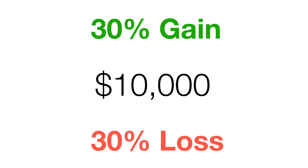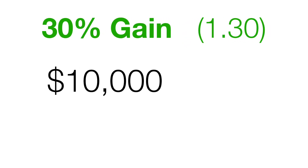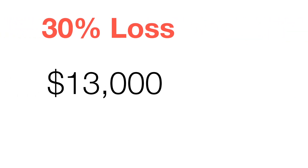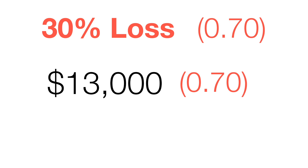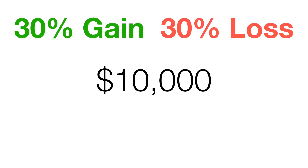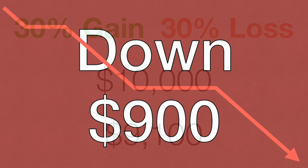Let's look at what that means. Say you have $10,000 and you make a 30% gain and then a 30% loss. You'd think that puts you back at $10,000, but that's not how it works. A 30% gain gives a multiplier of 1.30, so $10,000 × 1.30 = $13,000. But a 30% loss on that $13,000 has a multiplier of 0.70, because 70% is left over. So $13,000 × 0.70 = $9,100. After a 30% gain followed by a 30% loss, you're left with $9,100 — down $900.